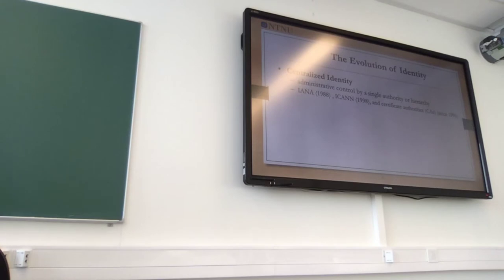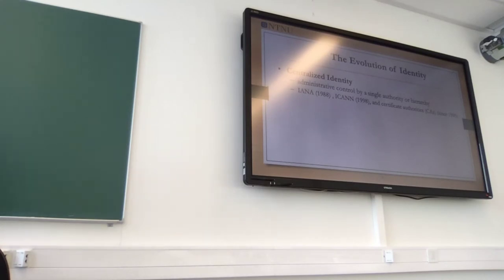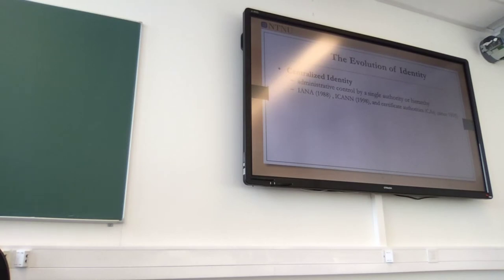In centralized identity, administrative control was by a single authority or hierarchy. There were organizations such as IANA, which controlled IP addresses, and ICANN, which controls domain names. We also had certificate authorities since 1995 — these certificate authorities verify that you are the owner of a given identity, that you own a public key and so on. If this organization fails, you'll probably lose your digital identity.